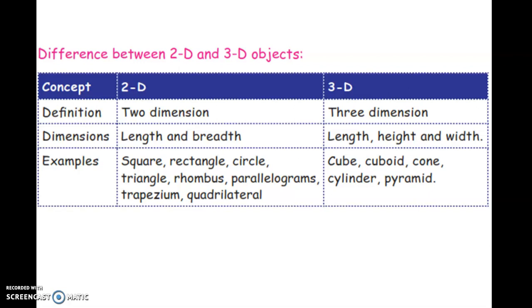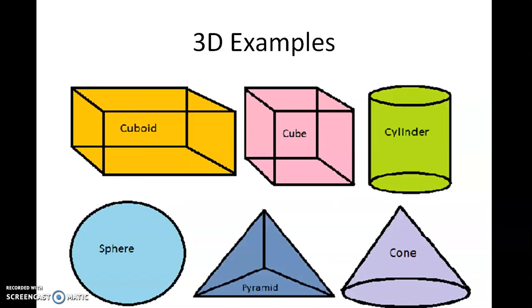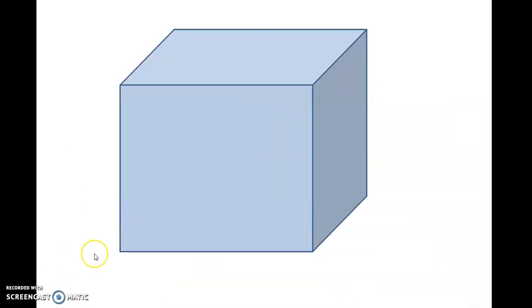2D examples are rectangle, circle, square, triangle, quadrilateral and pentagon. 3D examples are cuboid, cube, cylinder, sphere, pyramid and cone.